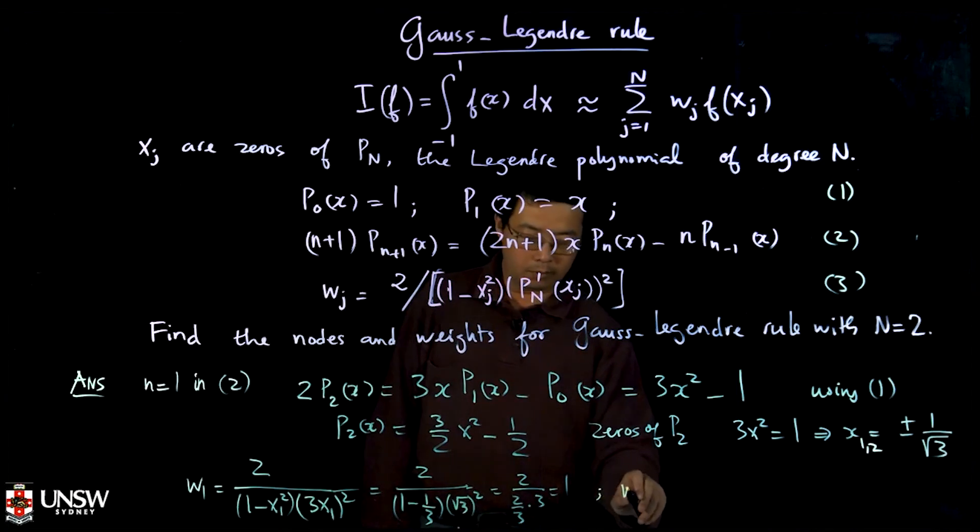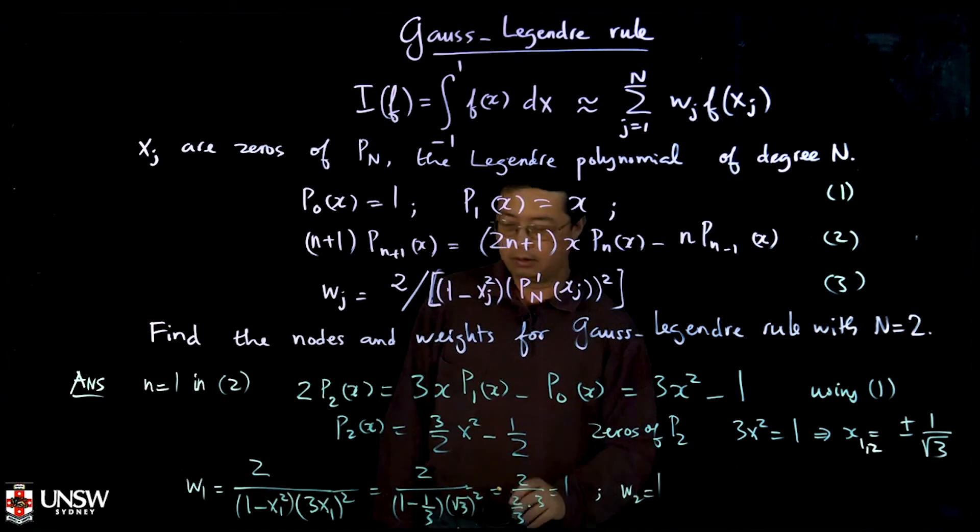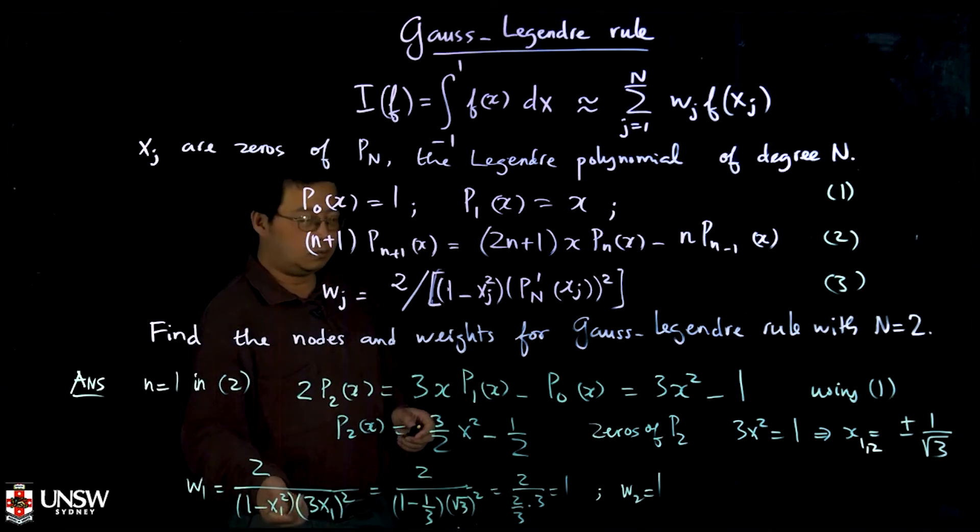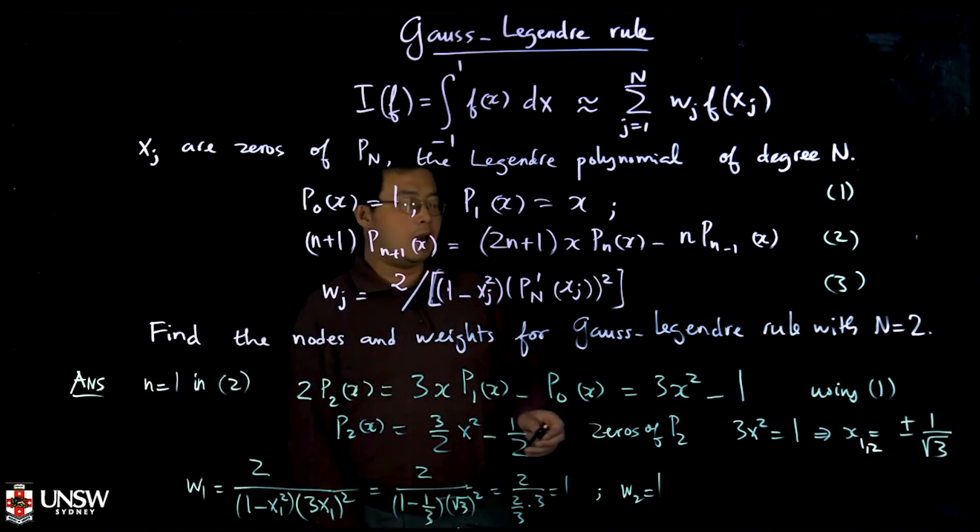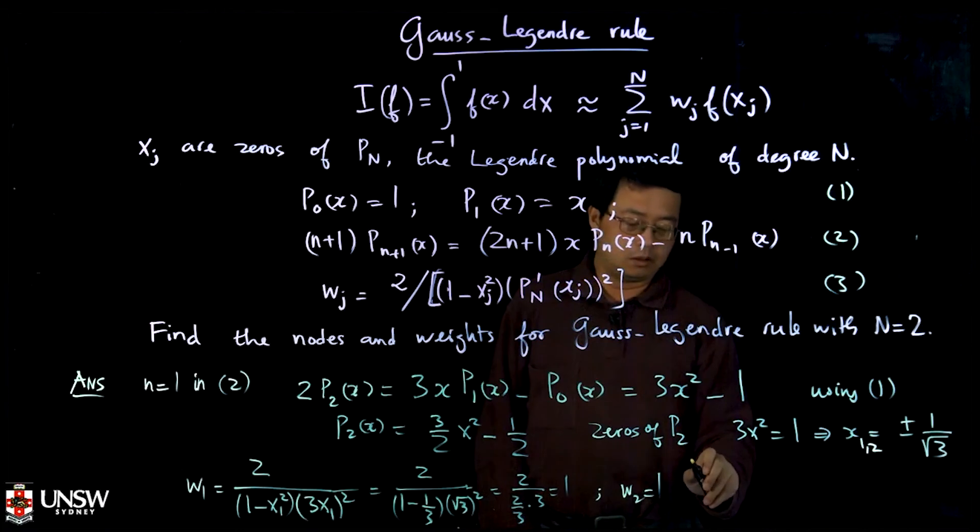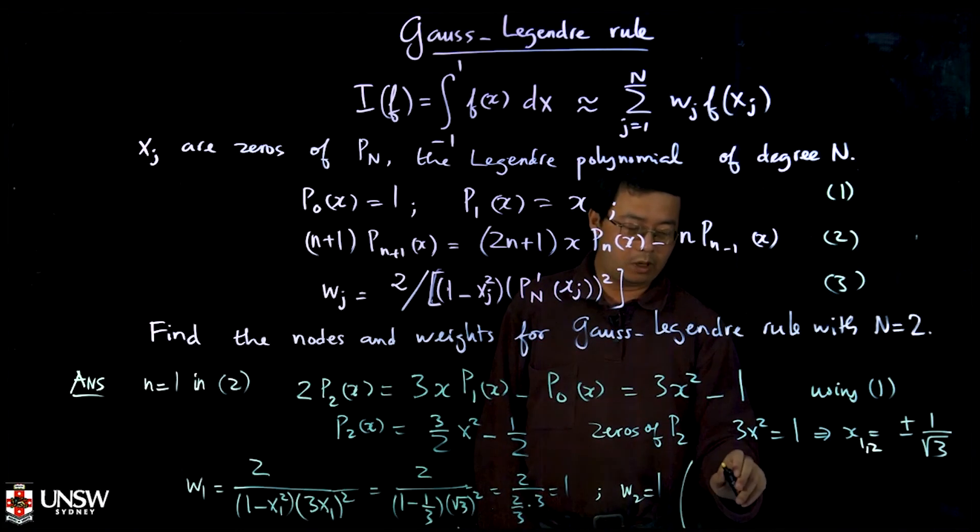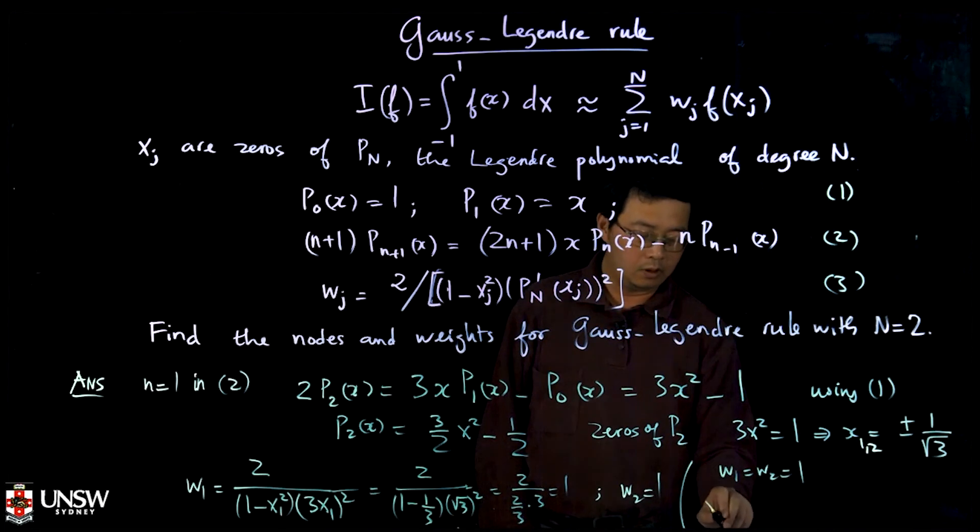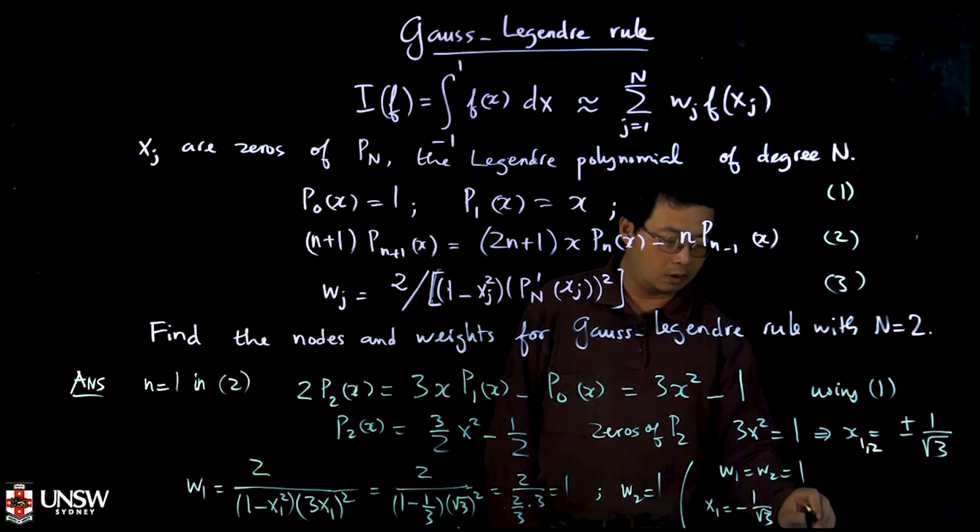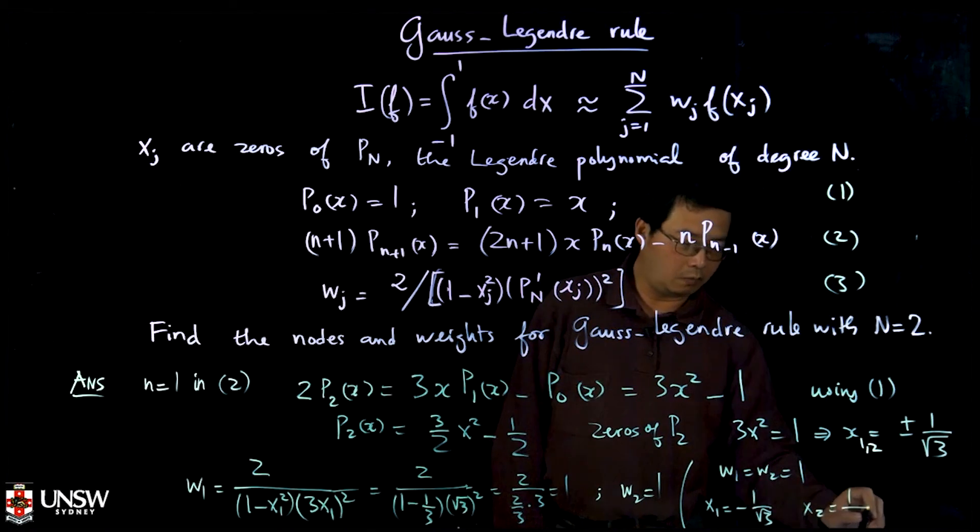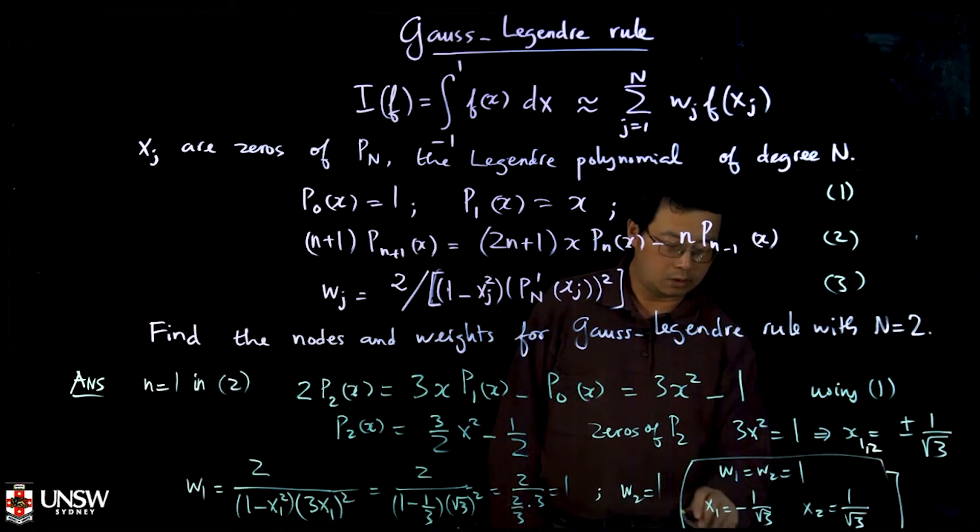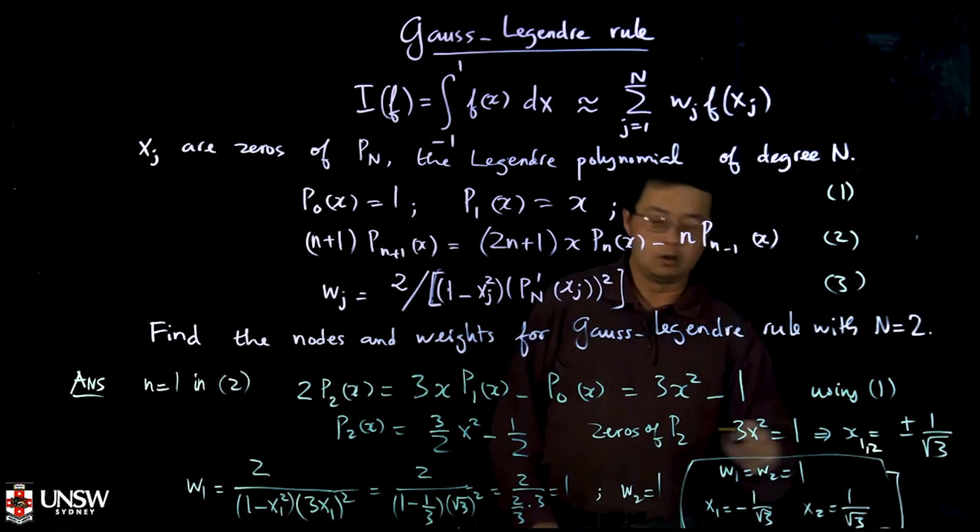You can do the same to have w₂ is also equal 1, because it's just plus or minus root 3, and when you square it's the same. So the weight will be w₁ equal w₂ equal 1, and the point is x₁ equal minus 1 over root 3, and the second point is 1 over square root 3. So this is the answer to the question.